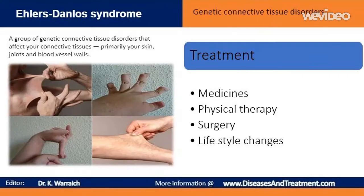Treatment for Ehlers-Danlos syndrome aims to prevent dangerous complications. Medicines: your doctor may prescribe drugs to help you control pain. Over-the-counter pain relievers such as acetaminophen (Tylenol), ibuprofen (Advil, Motrin), and naproxen sodium (Aleve) are the mainstay of treatment. Stronger medications are only prescribed for acute injuries.